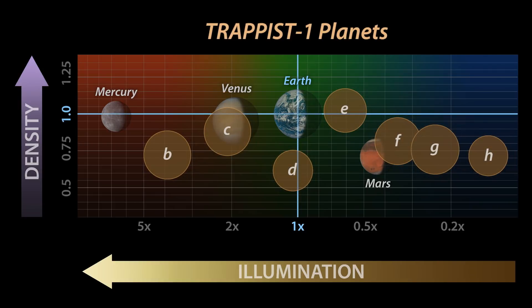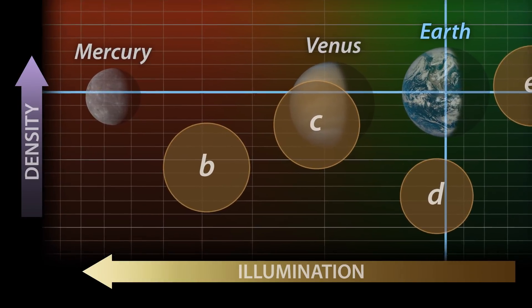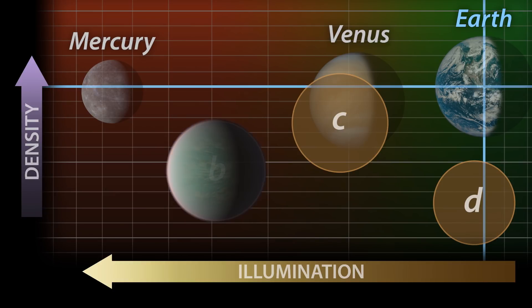Now we can add the TRAPPIST-1 planets and compare them. You might first note that while TRAPPIST-1b is a bit on the warm side, c is a pretty close match for Venus in all of these properties. As far as this study goes, they're nearly twins.